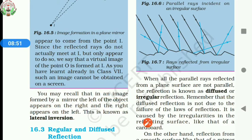Suppose you are standing in front of a mirror and raise your right hand. Then in the mirror, your left hand will appear raised, and if you raise your left hand, then the right hand of your image will be raised. This change of side due to a mirror is called lateral inversion.